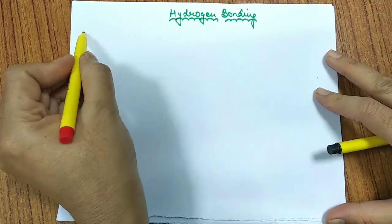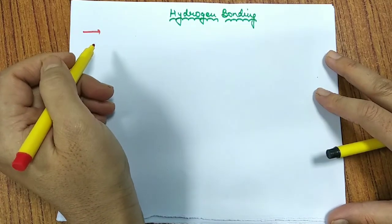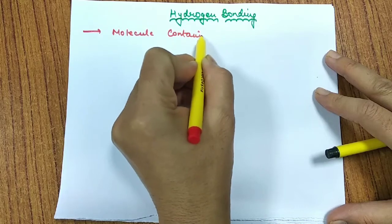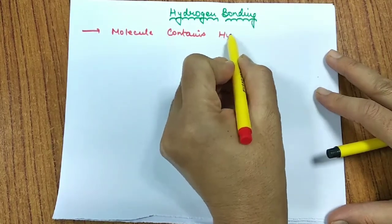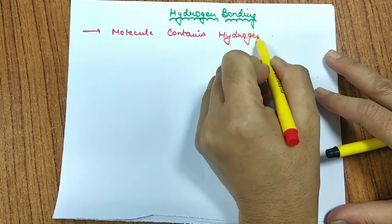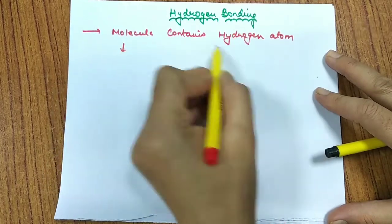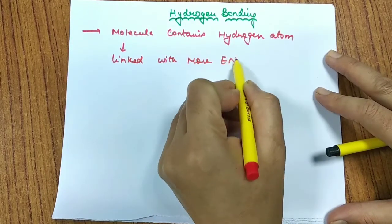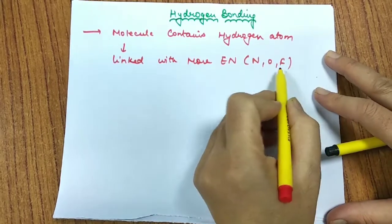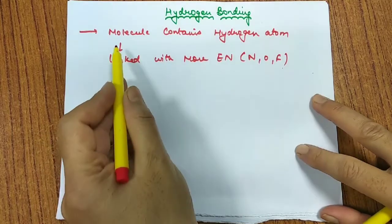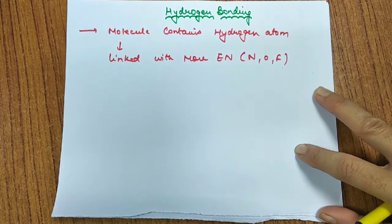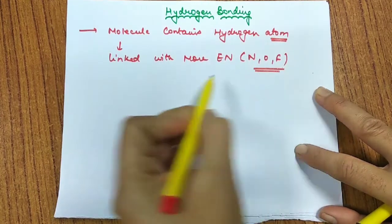When we talk about Hydrogen Bonding, we should know the special conditions and the basic introduction. First, the molecule must contain a Hydrogen atom. Second, if this molecule which contains a Hydrogen atom is linked with a more electronegative atom like N, O, or F — Fluorine, Oxygen, or Nitrogen — it forms a bond. There is a force of attraction, meaning this atom attracts the shared pair of electrons.